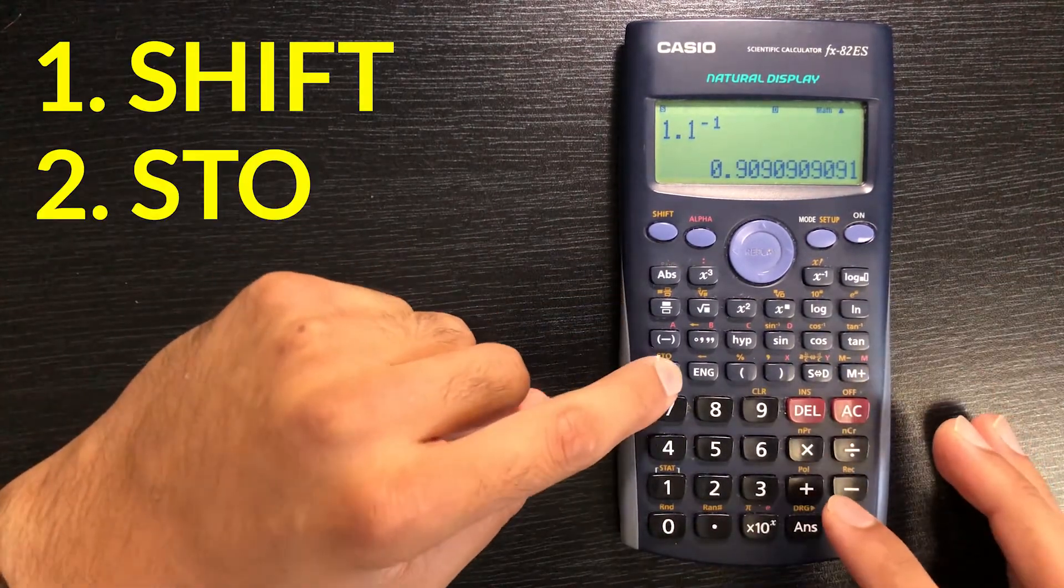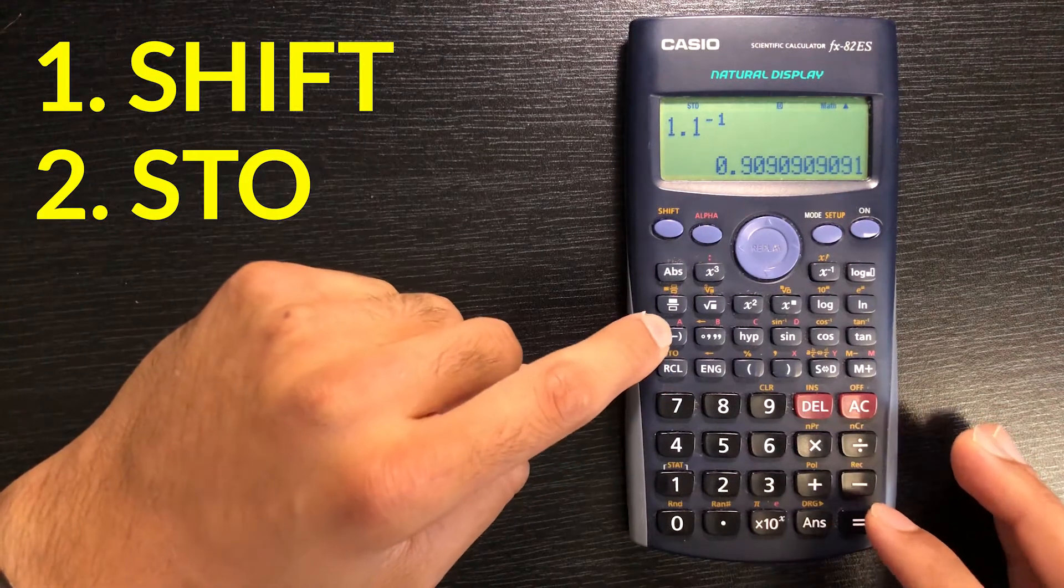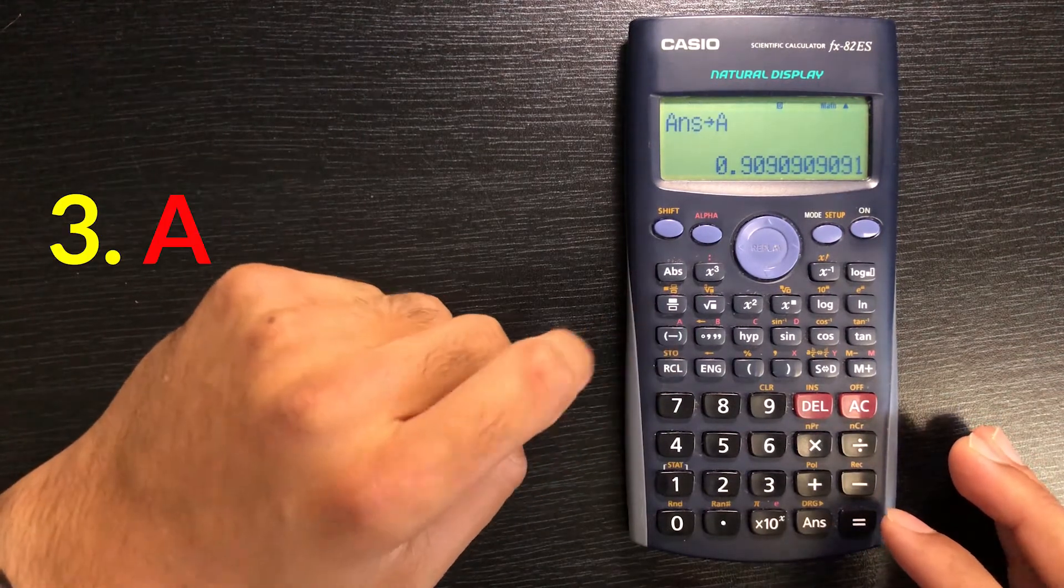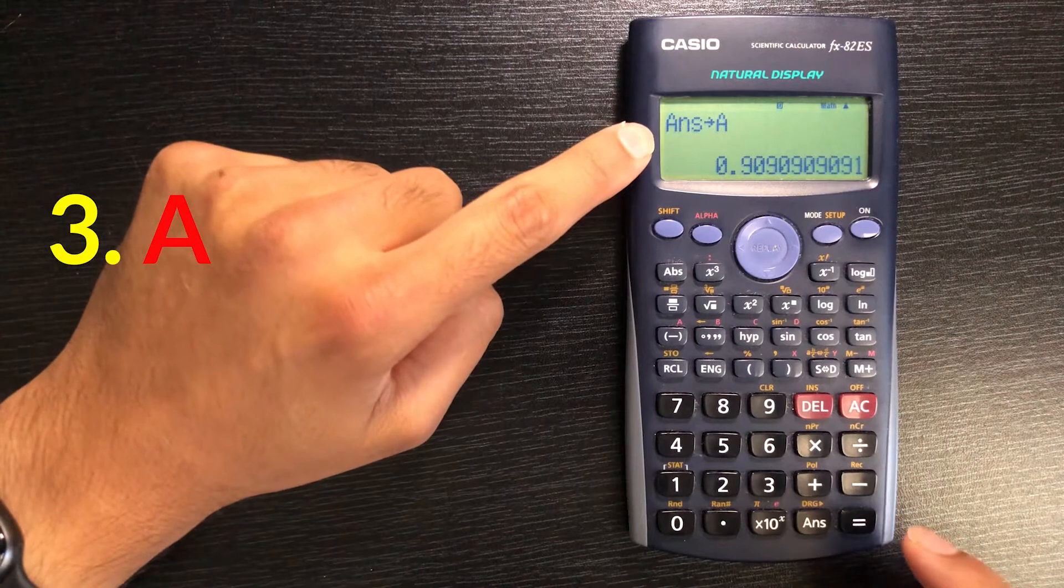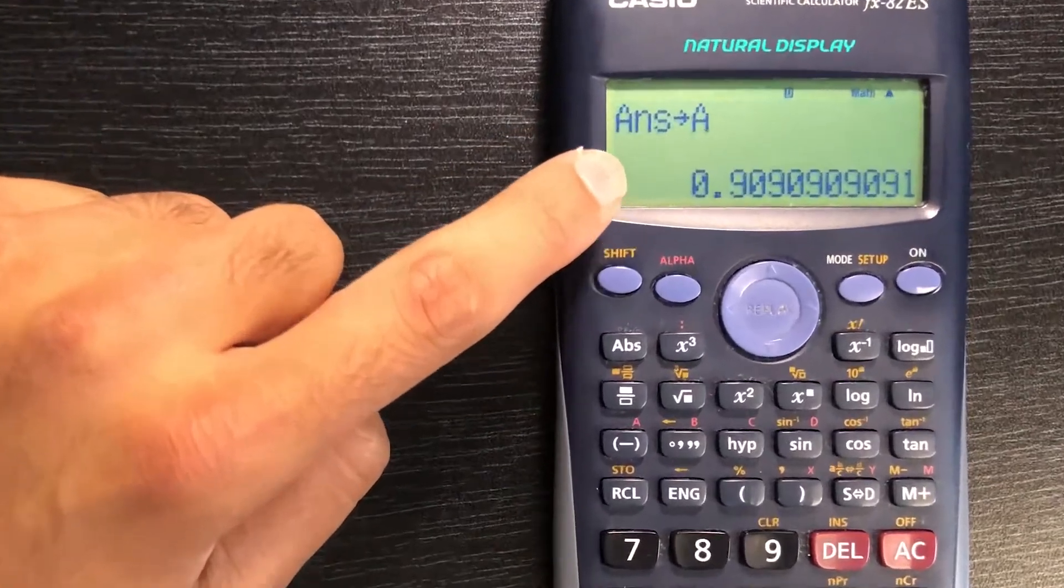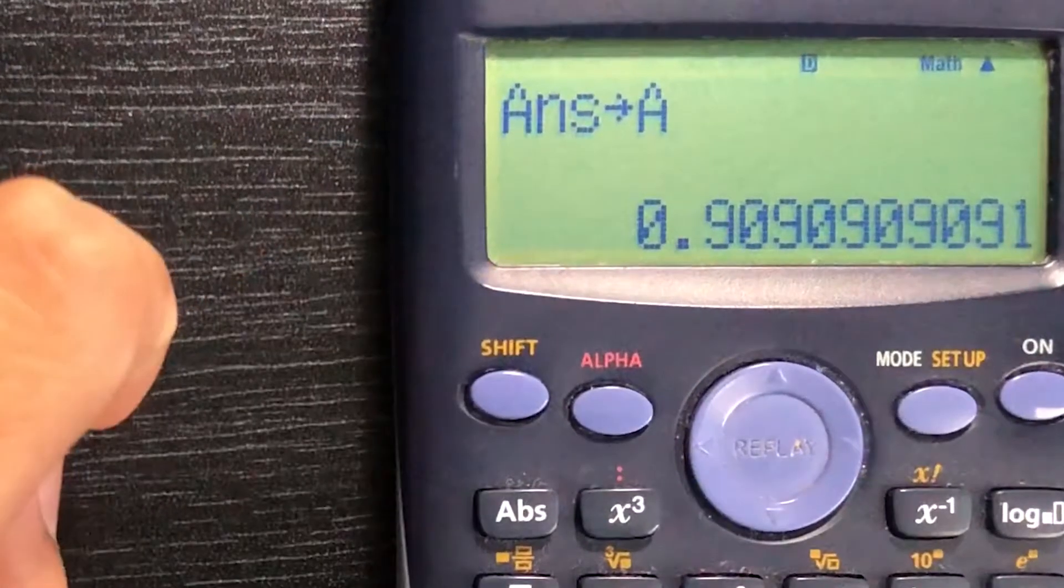I will press store and then I'll choose a letter. For example a, and then it's telling me your answer of 0.9 will be stored as a and I'll press equals.